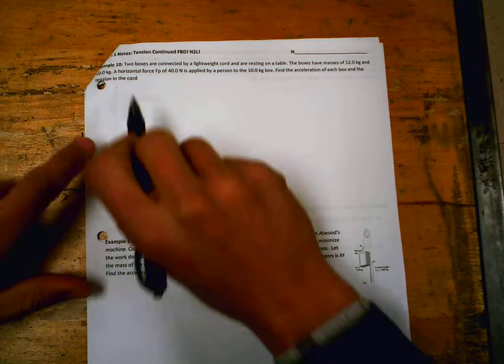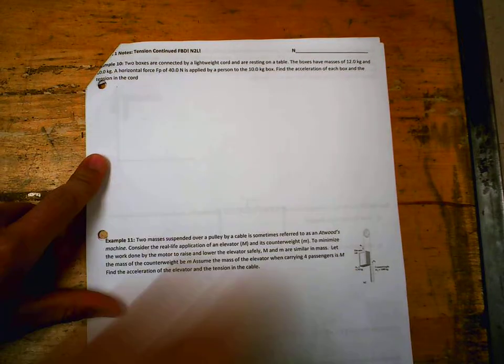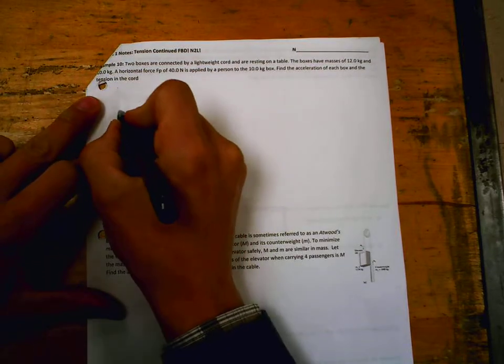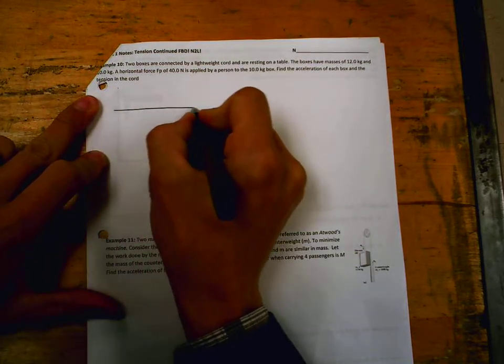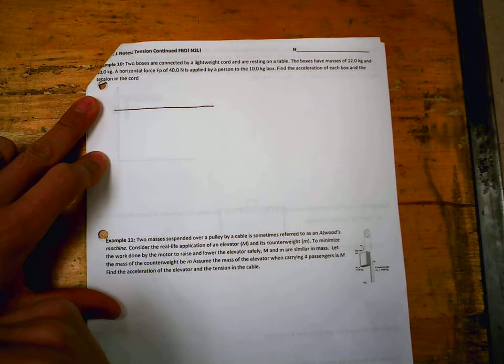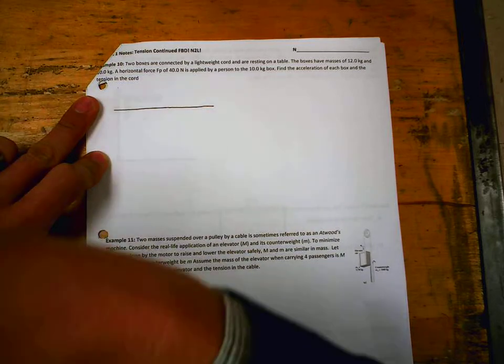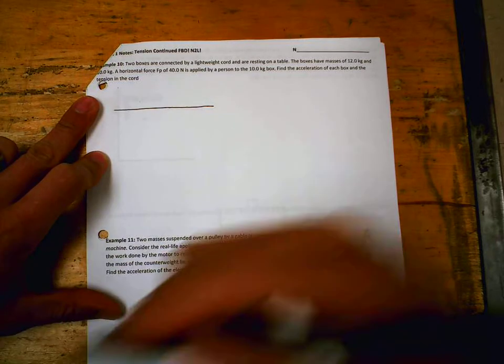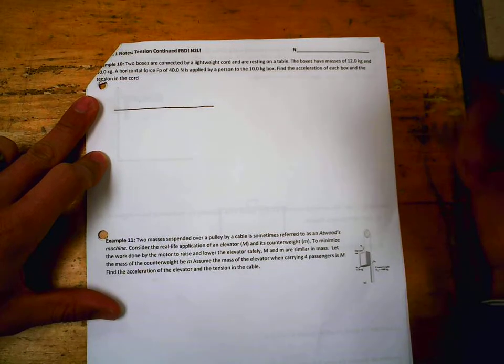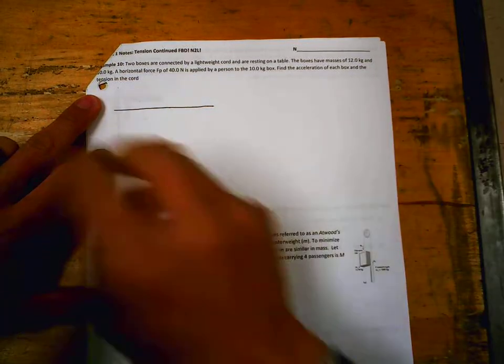So we've got two boxes connected by a lightweight cord and resting on a table. Other situations where this physics might apply is like two cars connected by a tow rope, or maybe when you were a little kid learning how to ski, your parents tethered you to them. So two masses connected and some tension in a string of something.